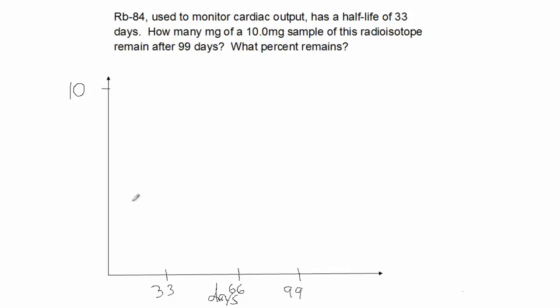33 days is one half-life. 66 days, we've gone through two half-lives. In 99, we've gone through three half-lives.